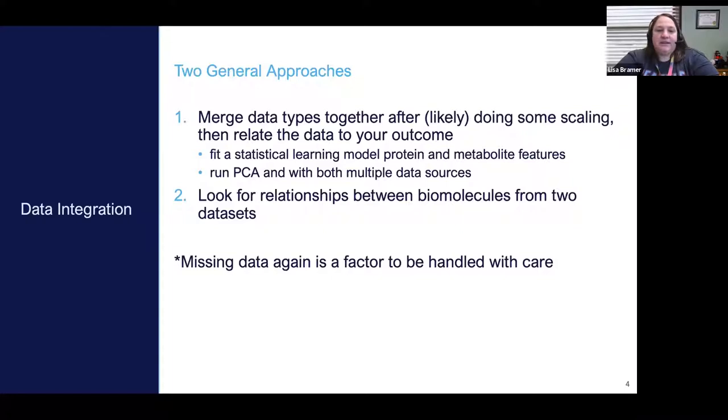And then maybe trying to relate that data to the outcome of interest, like your treatment groups. Some examples would be to fit a statistical learning model to determine what protein and metabolite features are predictive of your grouping, or running a PCA with multiple data sources. The other approach is rather than trying to model everything according to the outcome, take a look at each data source relative to the other and look for relationships between those biomolecules.